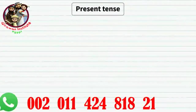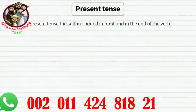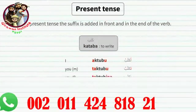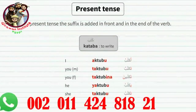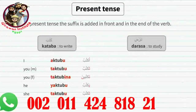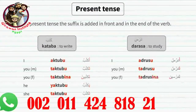Present tense — almudar'a. In present tense, the suffix is added at the front and at the end of the verb. Example, from kataba: aktubu, taktubu, taktubina, yaktubu, taktubu. Notice how there are five pronouns but only four changes, since the second and fifth are the same. More examples: adrusu, tadrusu, tadrusina, yadrusu, tadrusu.